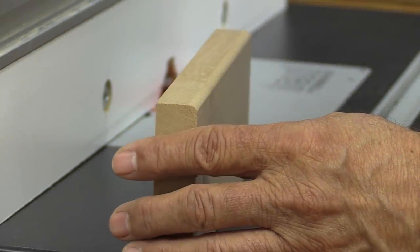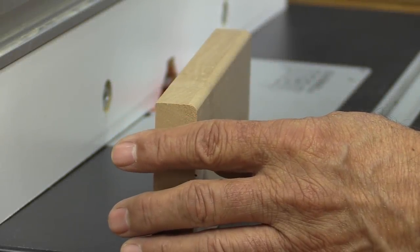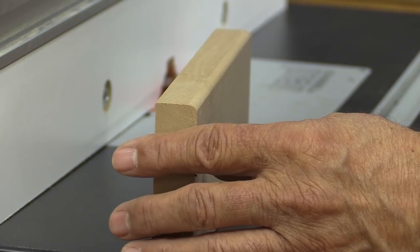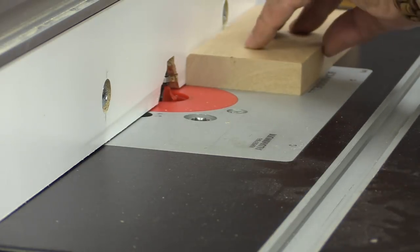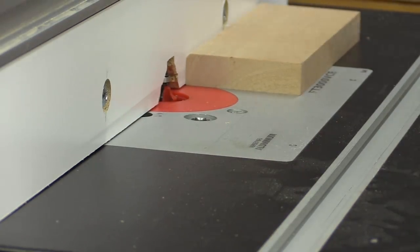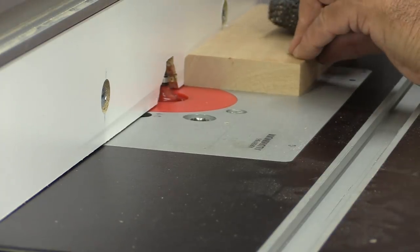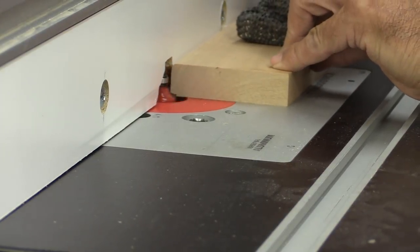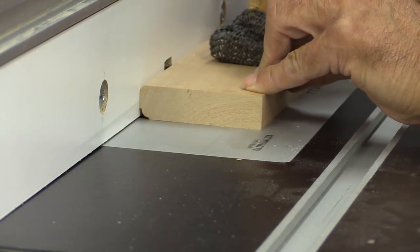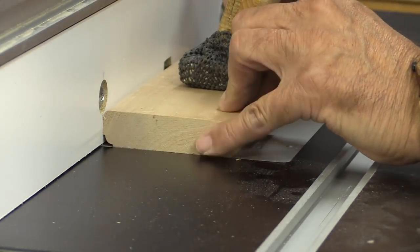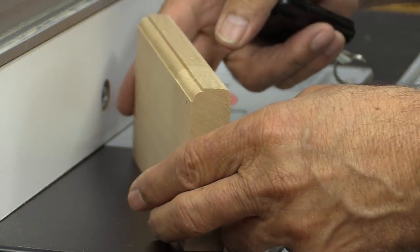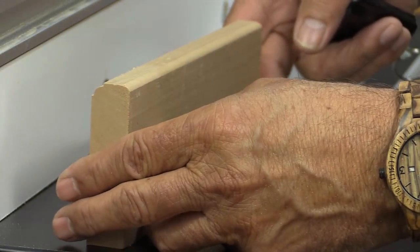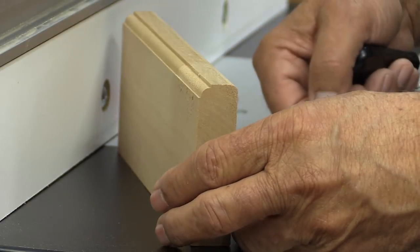There's what that first cut looks like. Now I'm going to change the height slightly and I'm going to change the bearing on that bit. Okay, I tried to get those even, so let's test it and see how well I did. There you go. And there's the two profiles that you can get from that one single bit.